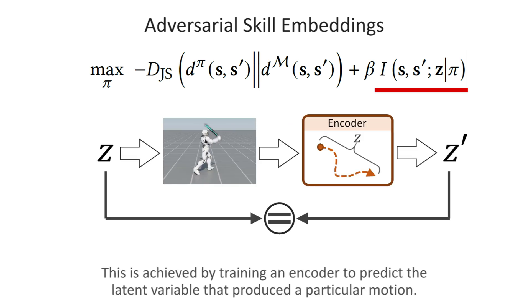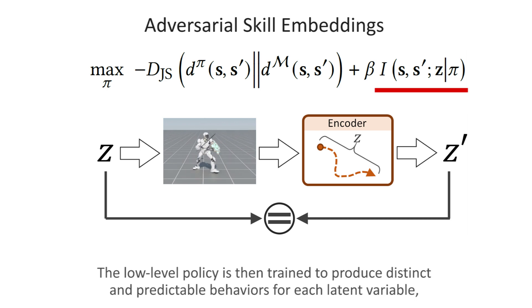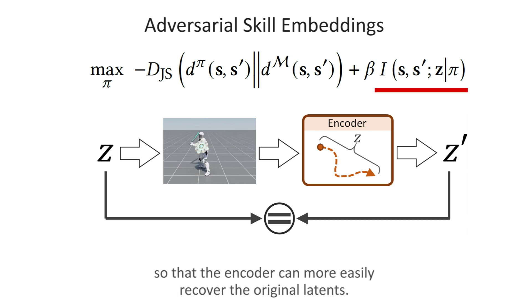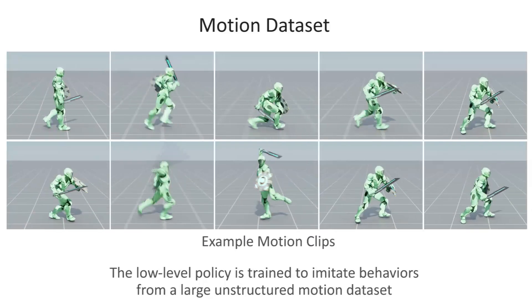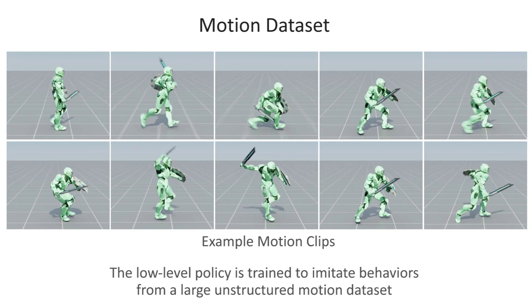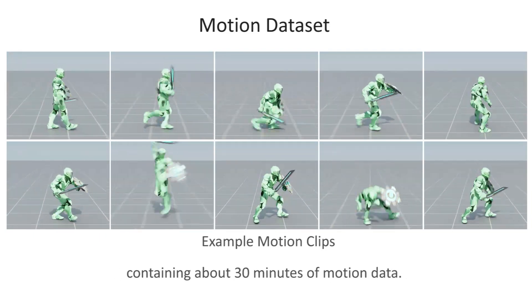This is achieved by training an encoder to predict the latent variable that produced a particular motion. The low-level policy is then trained to produce distinct and predictable behaviors for each latent variable so that the encoder can more easily recover the original latents. The low-level policy is trained to imitate behaviors from a large unstructured motion dataset containing about 30 minutes of motion data.